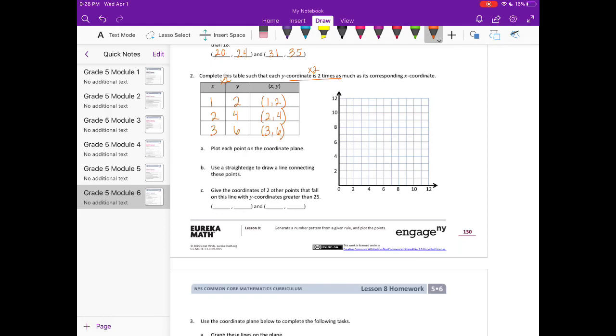Plot each point on the coordinate plane. So I have 1, 2, 2, 4, and 3, 6. Use a straight edge to draw the line.